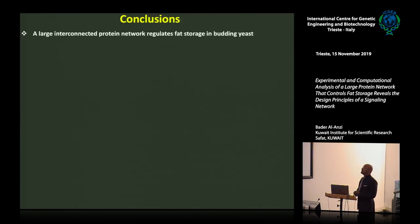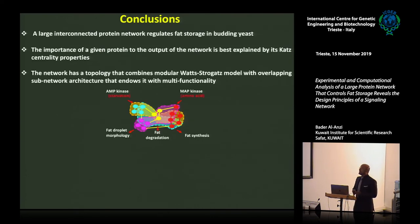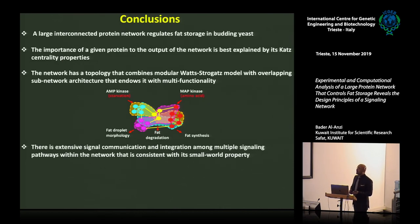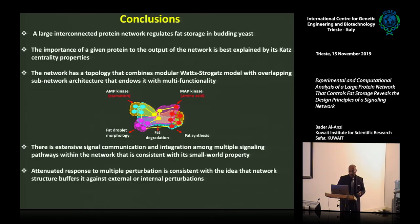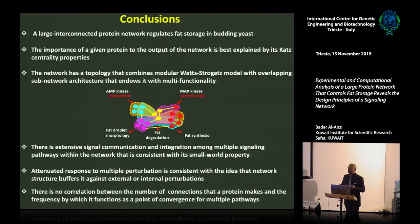In conclusion: we found a large interconnected protein network that regulates fat storage in budding yeast. The importance of a given protein to network output is best explained by its katz centrality. The network has a topology combining modular Watts-Strogatz features with overlapping sub-network architecture that endows it with multifunctionality — though subtasks map across modules rather than within them. There exists signal communication integrating multiple pathways, consistent with small-world properties. There is also attenuated response to multiple perturbations, consistent with buffering. However, there is no correlation between number of connections and frequency of functioning as a point of signal convergence.